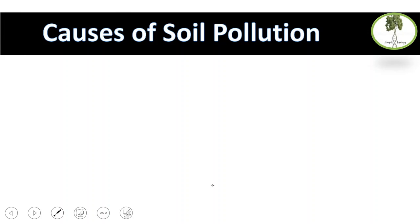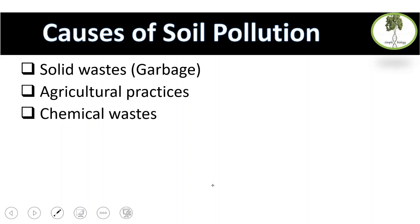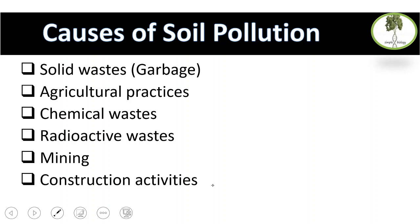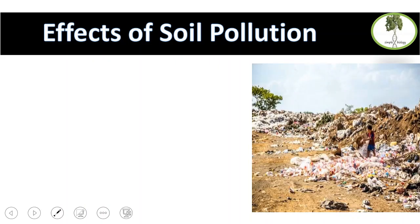Now, soil pollution. What are the causes of soil pollution? Solid wastes and garbage, agricultural practices like fertilizers, herbicides, and pesticides, chemical wastes from nearby industries, radioactive wastes and nuclear fallouts, mining, construction activities and construction wastes, natural causes like volcanic eruptions, and acid rain which decreases the pH of the soil.